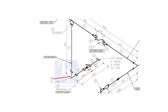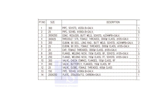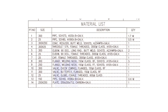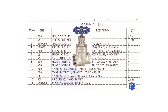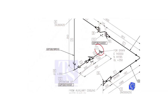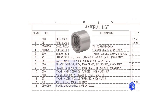Item number 6 is a 90-degree, female threaded, class 3000, 25 NB elbow. Item number 12 is a 25 NB, female threaded globe valve. The class is 600 pounds. Item number 7 is a 25 NB, female threaded cap. The class is 3,000 pounds.